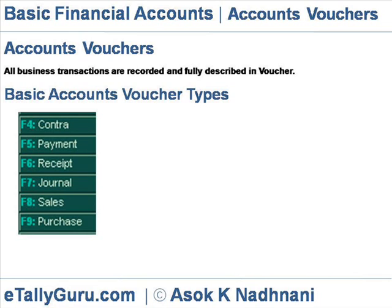Transactions related to trade purchases only are recorded through sales, purchase, debit, and credit note vouchers. Other non-trade purchases like machinery or furniture for use should be entered through a journal voucher or other special subsidiary books. During voucher entry, Tally verifies that the total of all debits must be equal to the total of all credits in each voucher. The voucher cannot be saved if the total of debits is not equal to the total of credits.